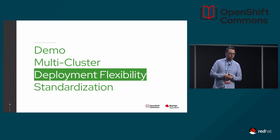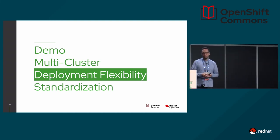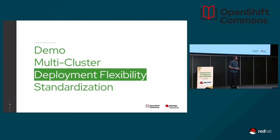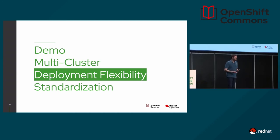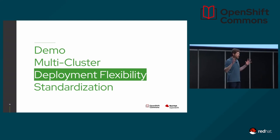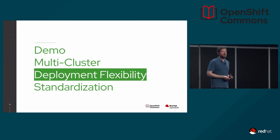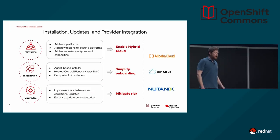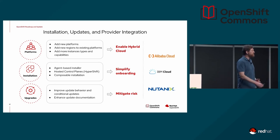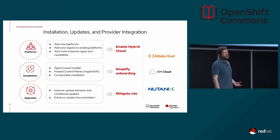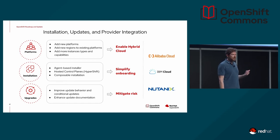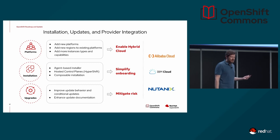Ramon will walk you through deployment flexibility, and then I'll come back for standardization. You've seen a lot of details about OpenShift — sometimes people ask what's the difference between OpenShift and Kubernetes. What Daniel showed us, with all the pieces packaged together and made easy to consume — that's the value OpenShift provides. Let's talk about installing, updating, and integrating OpenShift with more providers. In terms of new platforms, we have Alibaba Cloud, IBM Cloud, and Nutanix — some already there, some on the roadmap. We're also adding more regions to existing platforms, especially the major public clouds — a continuous effort.